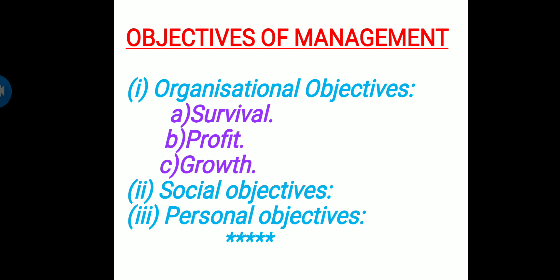So, the main organizational objectives are: the organization wants to survive; after surviving, it wants to earn maximum profit; and after earning maximum profit, it wants to grow globally. These are the basic objectives of the organization.